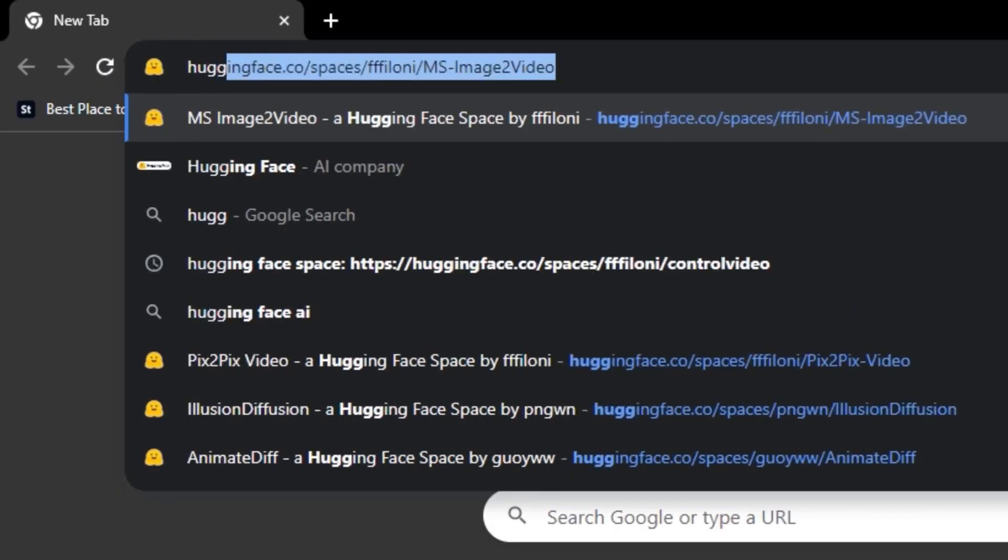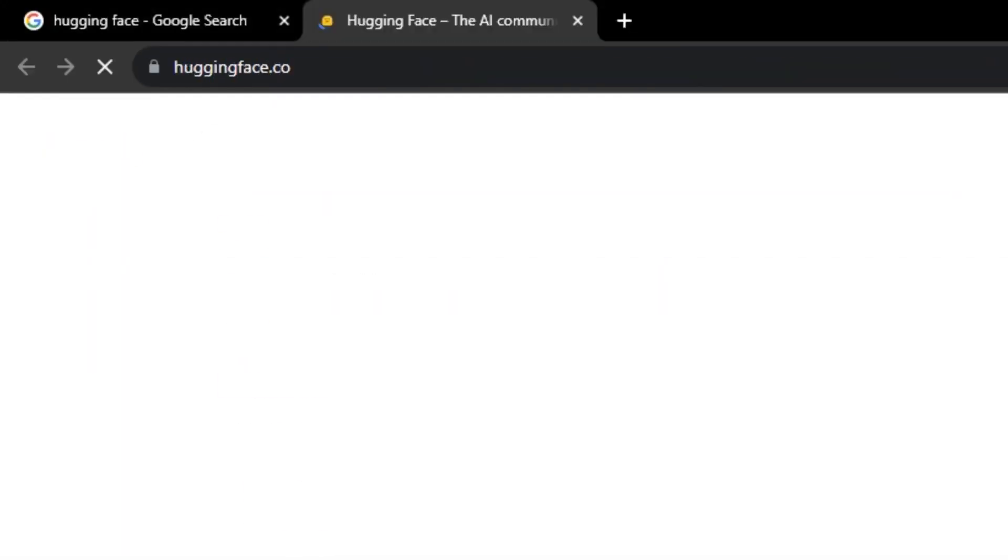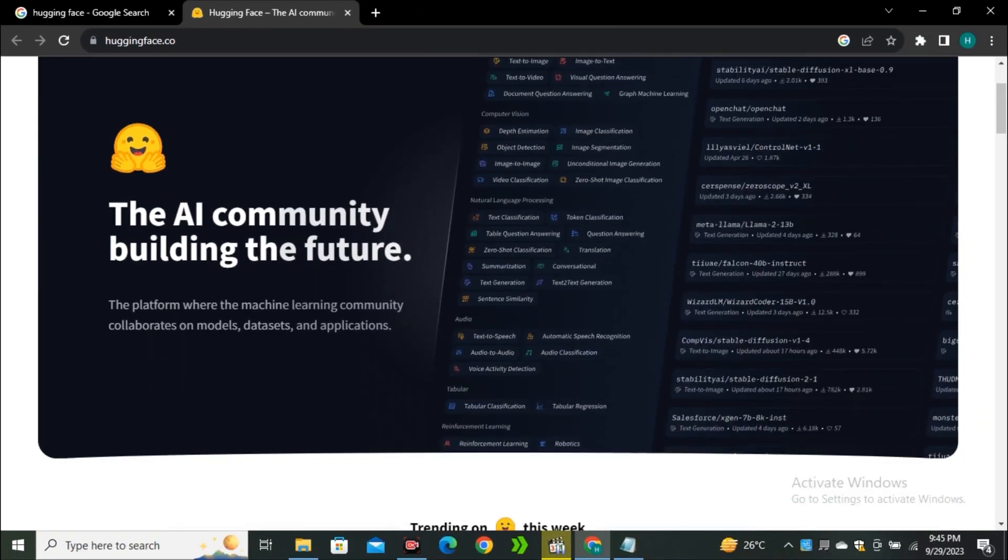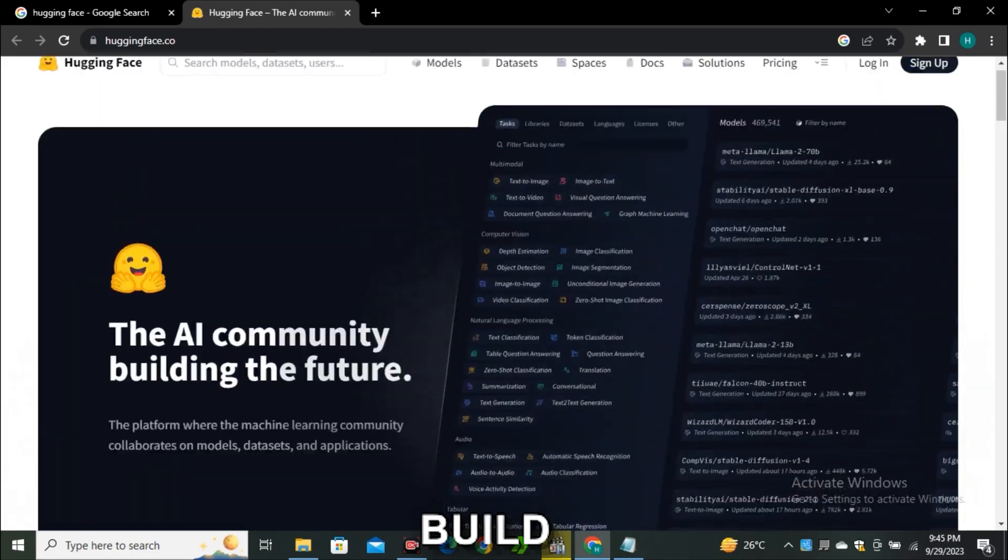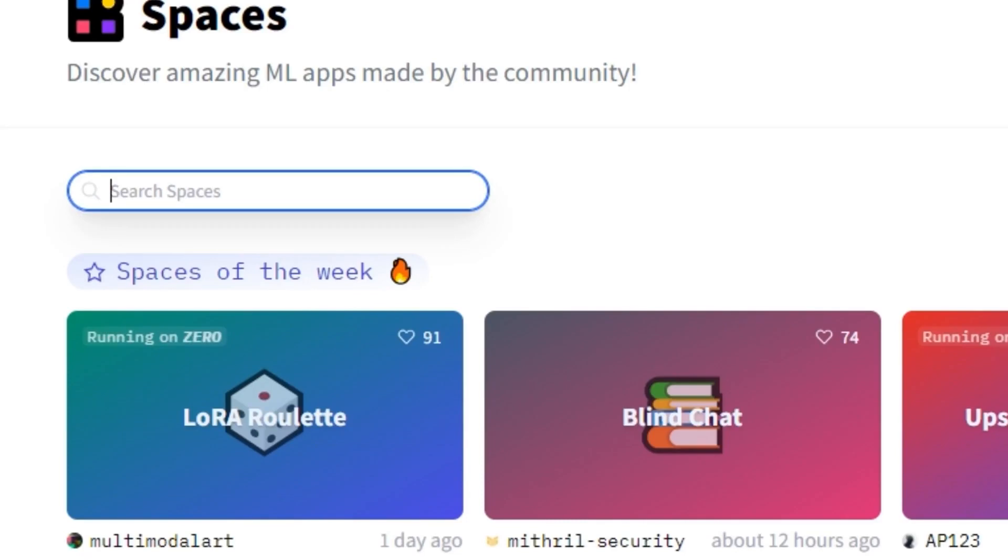HuggingFace is a leading open-source platform for developing and deploying natural language processing models. It's like the ultimate playground for anyone interested in machine learning and data science. Think of it as a bustling hub where you can build, deploy, and train machine learning models with ease. It's kind of like the place where AI dreams come to life.